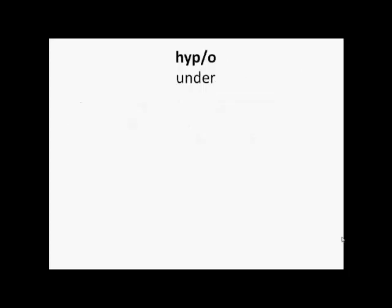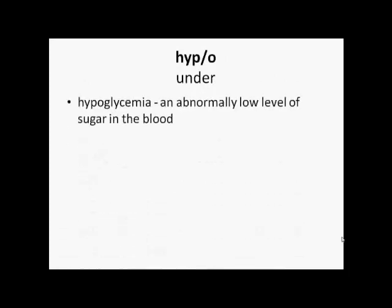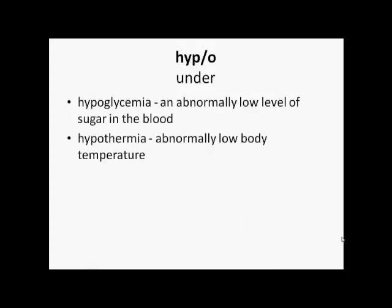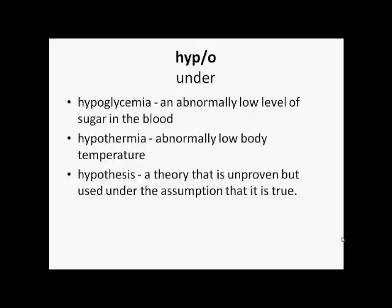'Hypo' is the opposite of hyper and means under or less than. So hypoglycemia is an abnormally low level of sugar in the blood. Hypothermia is abnormally low body temperature — remember 'therm' means heat or temperature. Hypothesis is a theory that is unproven but used under the assumption that it is true.